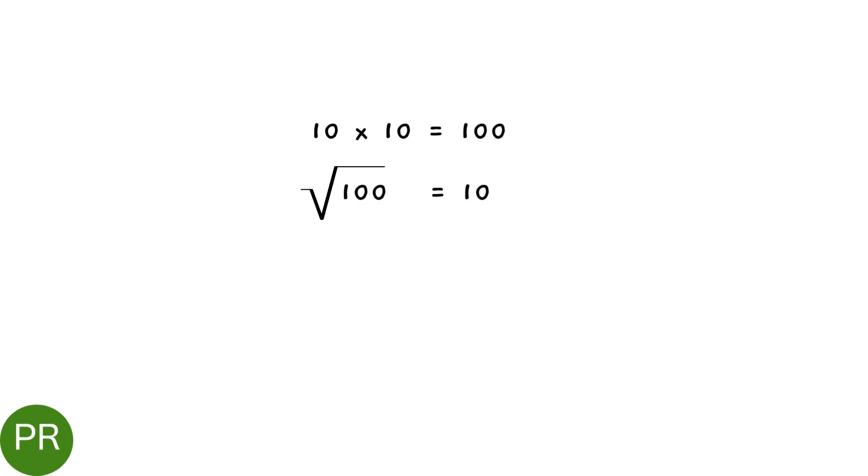If we square a positive number, which means we multiply it with itself, we always get a positive number. The opposite of this process is called taking a square root of a number. Simple enough.